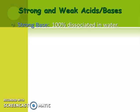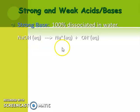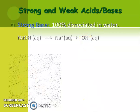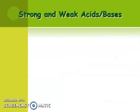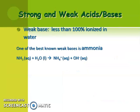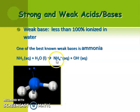Strong bases show 100% dissociation — dissociation means they separate into ions completely. The strong base we use most in lab is NaOH, which separates completely into sodium ions and hydroxide ions. Another example is slaked lime, Ca(OH)₂, which is used in barns to reduce odors — it completely ionizes in water. Weak bases like ammonia ionize less than 100%, leaving mostly molecules in solution, so they don't conduct electricity well.